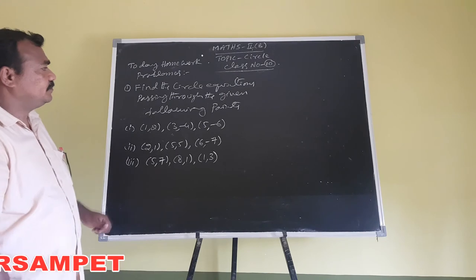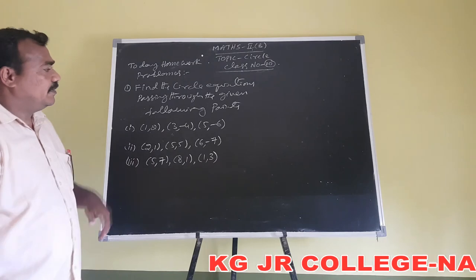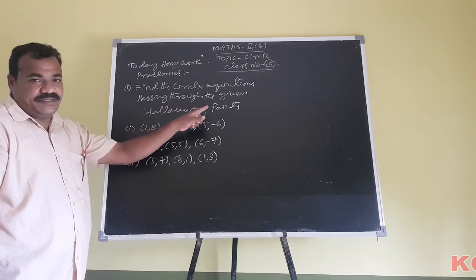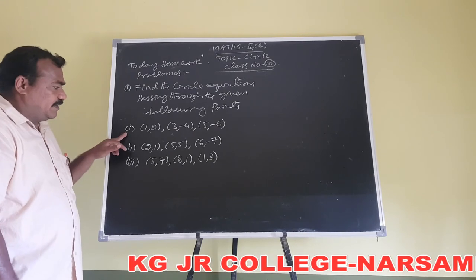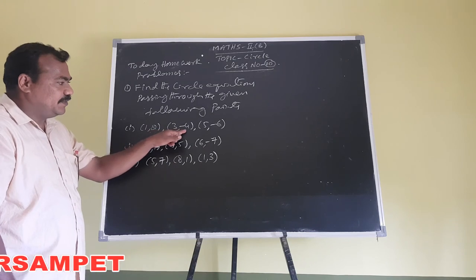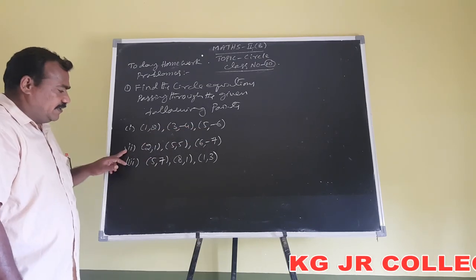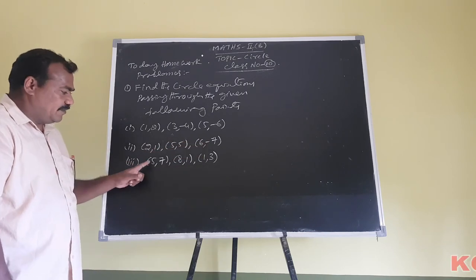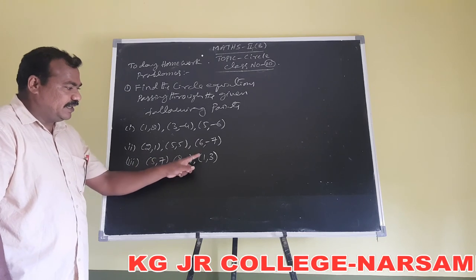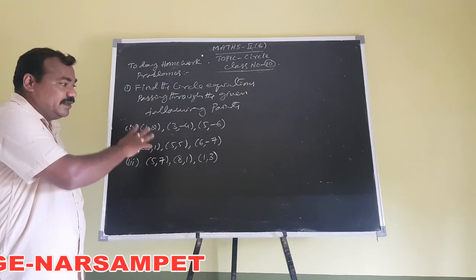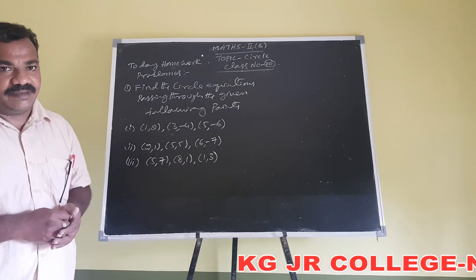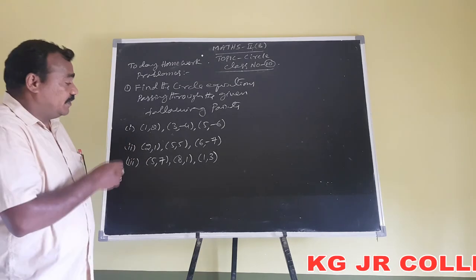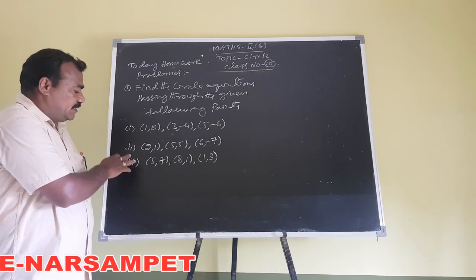Now, today's homework problems, based on the previous problem: find the circle equation passing through the given following points. There are three problems. First: points (1,2), (3,-4), (5,-6). Second: points (2,1), (5,5), (6,-7). Third: points (5,7), (8,1), and (1,3). Students, these are the main important problems in the circle topic — vital 7-mark questions. Listen carefully and make sure you solve all three.